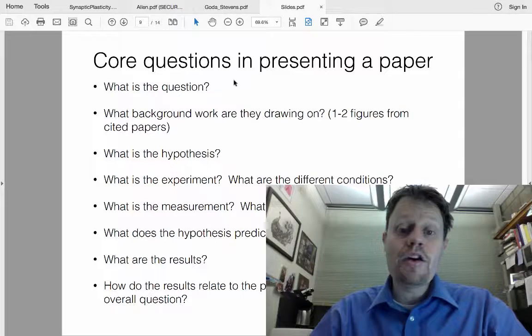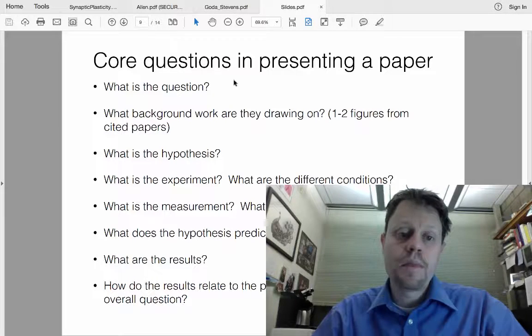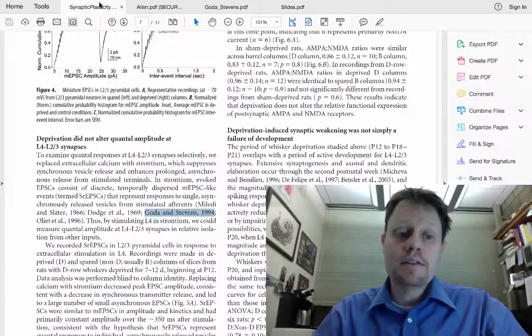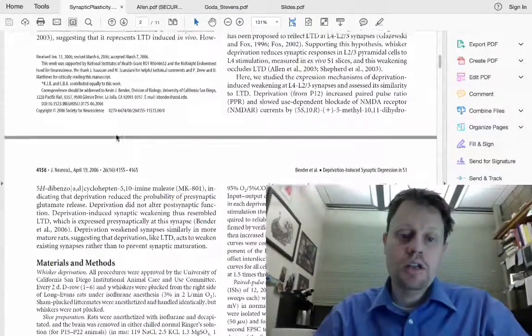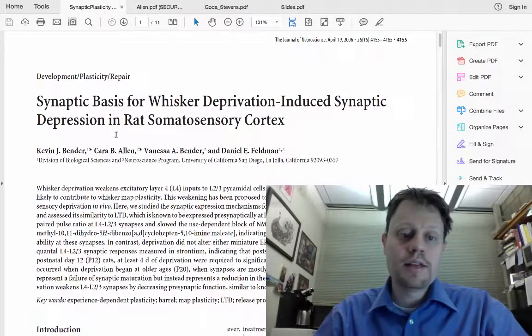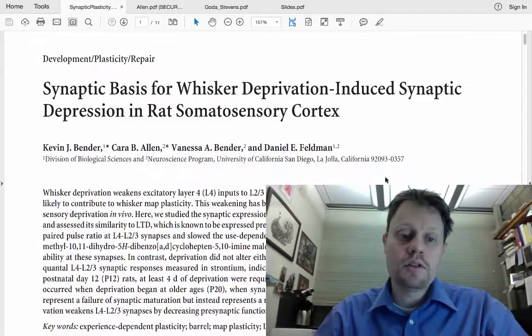However, there are a variety of other things to consider when looking at a paper. The first is, if you're presenting the paper, you should look at the background work they're drawing on. To find this, we're going to use this publication as an example: The Synaptic Basis for Whisker Deprivation in Somatosensory Cortex.